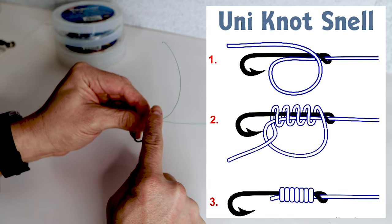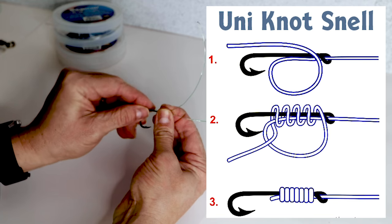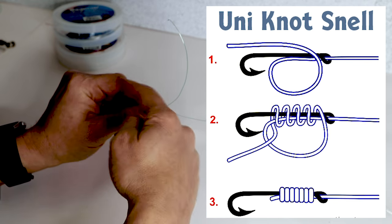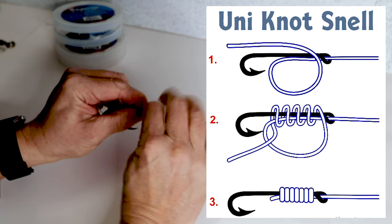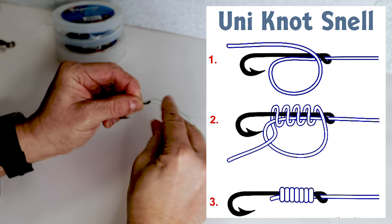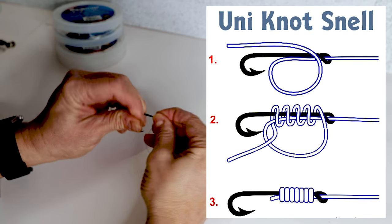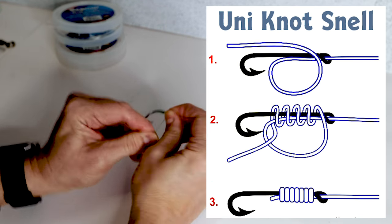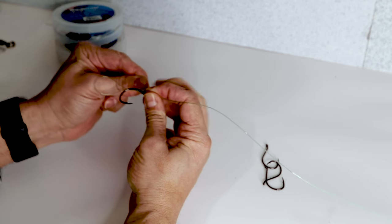From here, you're going to wrap this tag end six to seven times back towards the tip of the hook. Two, three, four, five, six, seven.